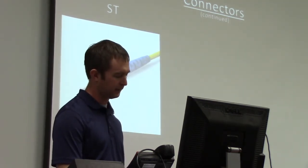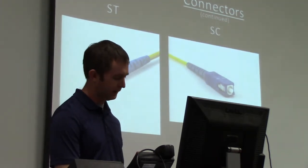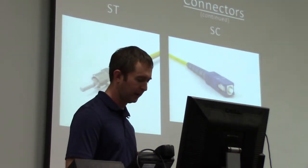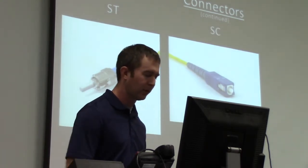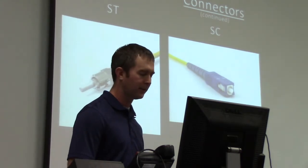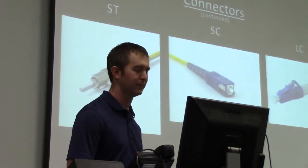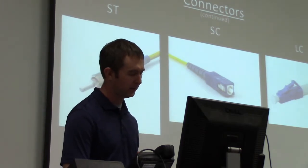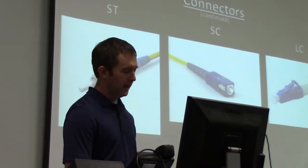The next type of connector is called the SC connector. The SC connector is also used with both single mode and multimode cable. This is a push-on, pull-off type of connector that uses a locking tab to keep it plugged in. It also uses a ceramic ferrule inside that ensures proper alignment and prevents light from being reflected as it passes through. Another commonly used connector is the LC connector, which can be used with single mode or multimode fiber optic cable and uses a plastic connector with a locking tab and ceramic ferrule inside.